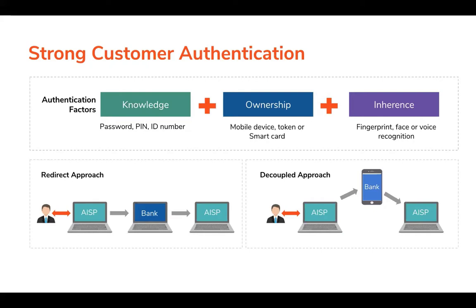The next security capability is strong customer authentication. In order to get user consent, we need to strongly identify the customer. It is specified that to strongly authenticate a user, we should have at least two factors from three categories. As shown in the demo, we used basic authentication and SMS authentication. However, different banks may require different authenticators like fingerprints, voice recognition, or FIDO authenticators. When thinking about a platform, we need to consider how easily we can integrate those different authentication factors.